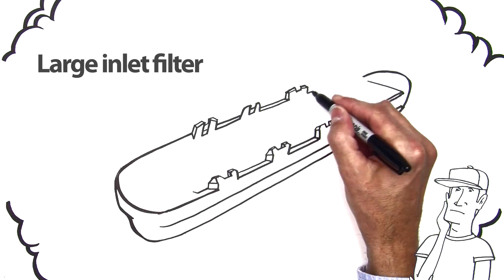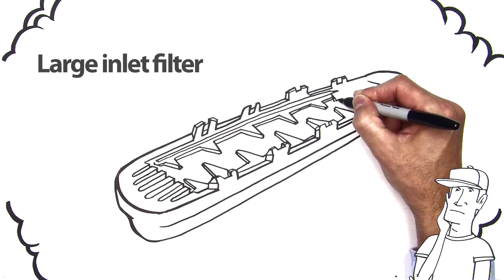Next, you'd make a filter with larger inlet holes that let grit pass through instead of clogging.